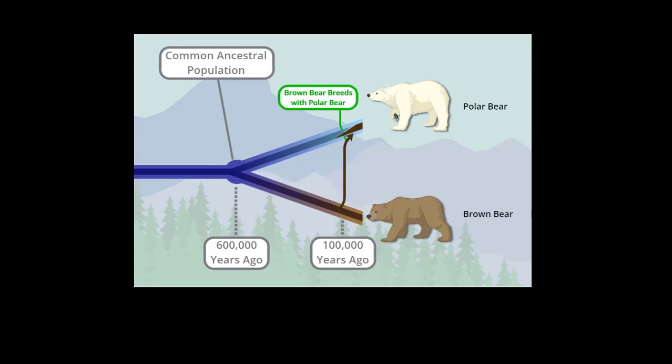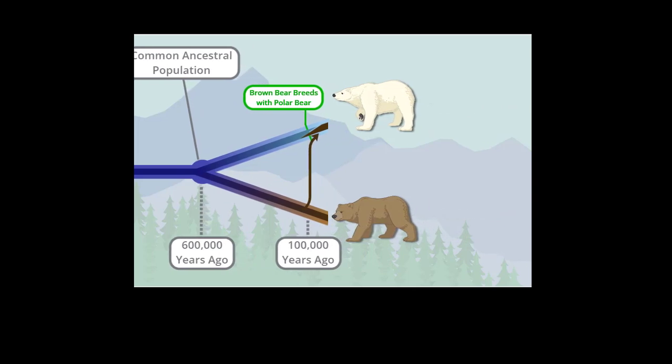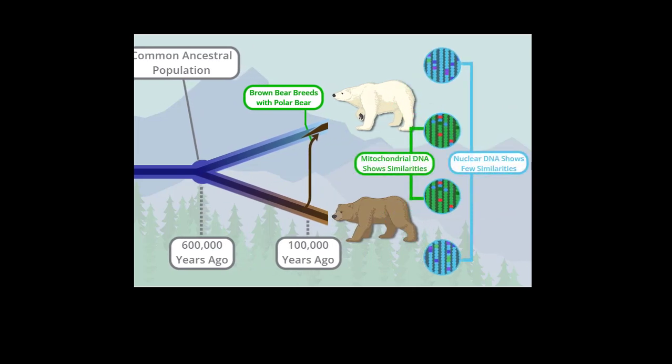The brown bear's hybrid daughters, carrying her mitochondrial DNA, joined the polar bear population and interbred with them. Her brown bear nuclear DNA came along too, but it was diluted with each generation, and little sign of it remains in the polar bear population today. Scientists think the females that had the older polar bear mitochondrial DNA were less successful at reproducing, but the brown bear mitochondrial DNA continued to pass successfully from mother to daughter. That's why today, many generations later, polar bears have the mitochondrial DNA that came more recently from a brown bear.